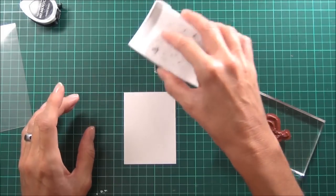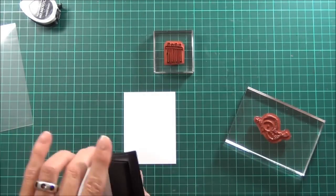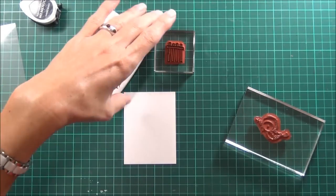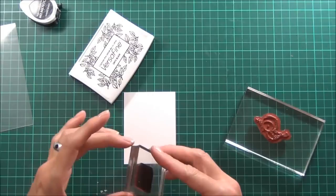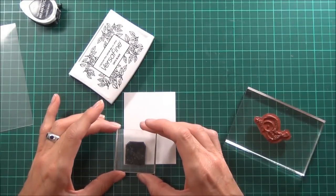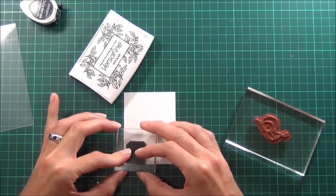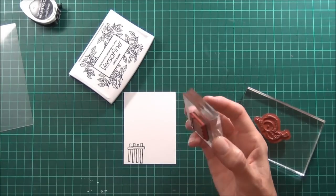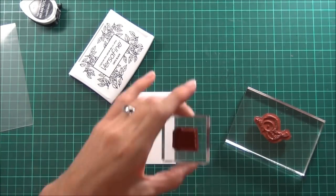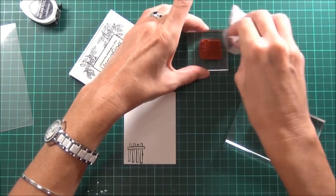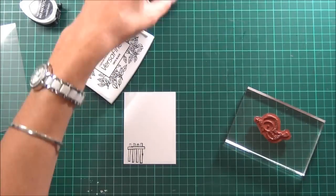I'm going to start with a little fence image from Stephanie Ackerman's Home Sweet Home set. I'm using VersaFine Onyx Black ink because I want to be doing some Inktense coloring, so it's a good ink for the Inktense pencils.